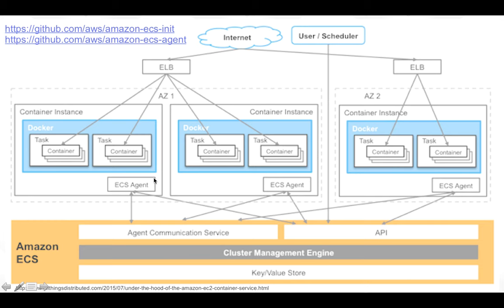The role of the ECS agent is to connect that instance to the ECS backend. The ECS backend is mainly about two things: the distributed state management — the key-value store that knows exactly what's going on with instances and containers — and the cluster management engine, which handles scheduling and management of the cluster. That yellow block is strictly backend; you have nothing to do with it. All you have to take care of is creating clusters and deploying instances.